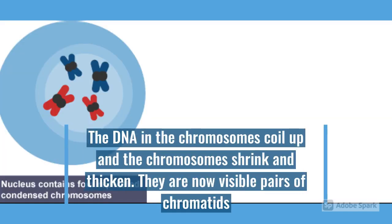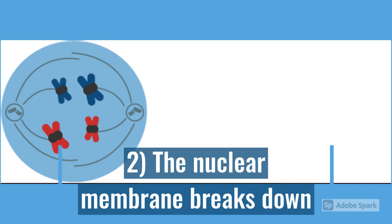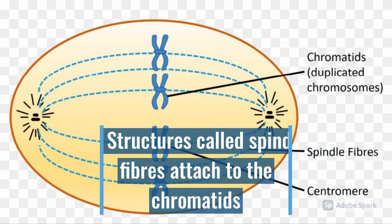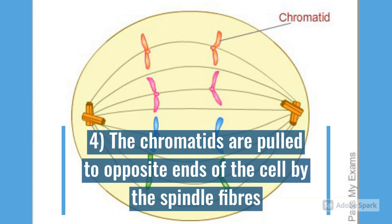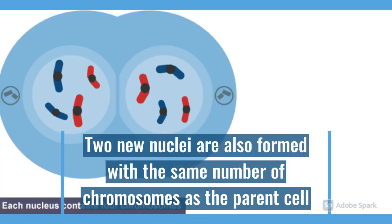Now let's learn about the stages. In the first stage, the DNA in the chromosome coils up and the chromosomes shrink and become thicker. The doubled chromosomes are now called chromatids. Then the nuclear membrane breaks down. Rope-like structures called spindle fibers attach to the chromatids. Then the chromatids are pulled to opposite ends of the cell called poles. Now that the chromatids are separated, they are called chromosomes again. Their DNA becomes looser and the new nuclear membrane forms around them. Two new nuclei are also formed.